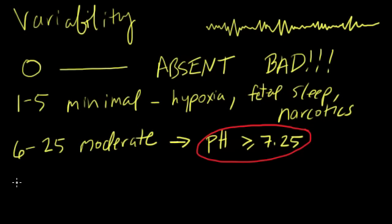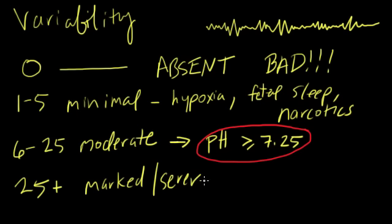Finally, we have variability of more than 25, and this is called marked or severe variability. And this is usually, guess what, fetal hypoxia.